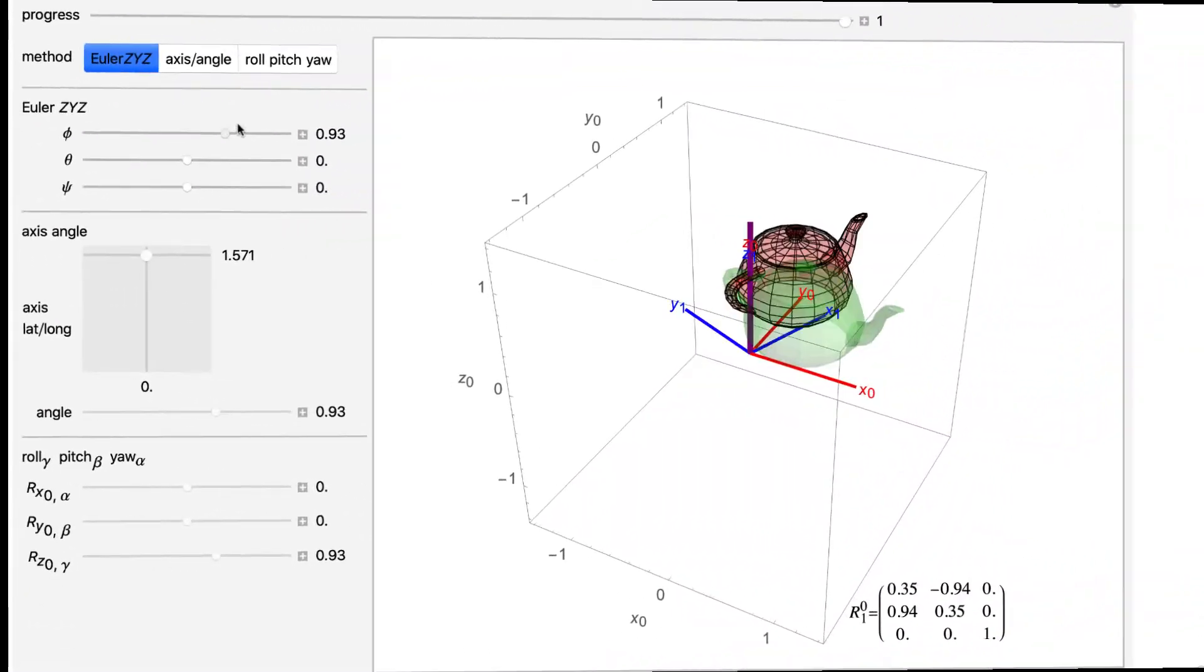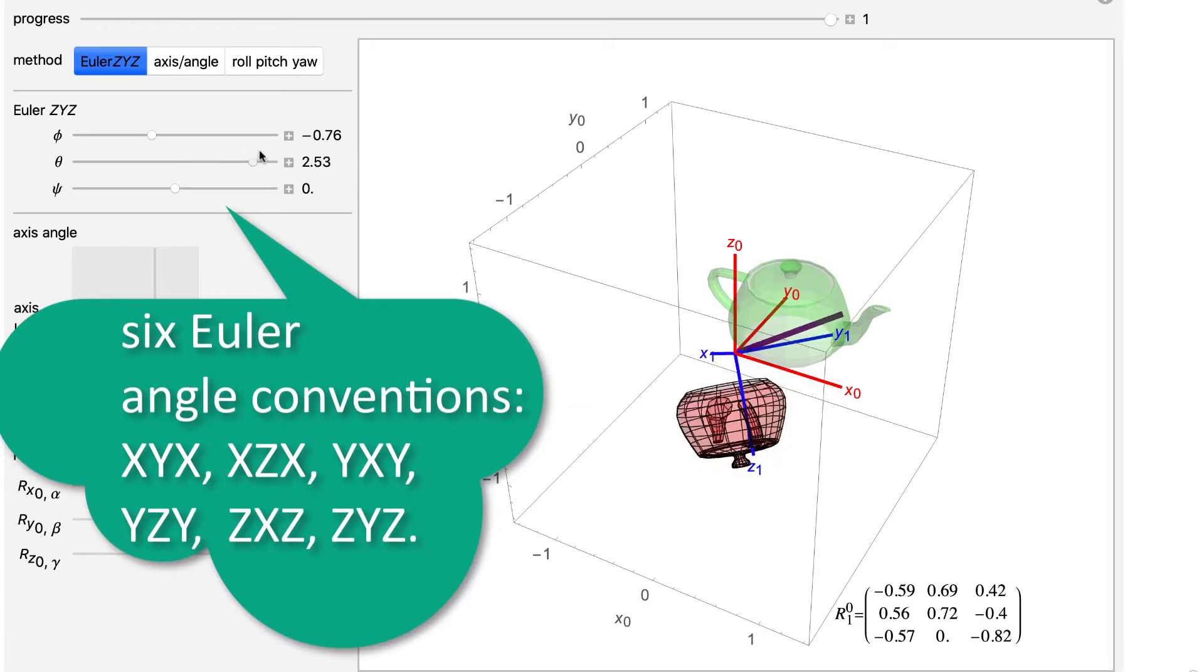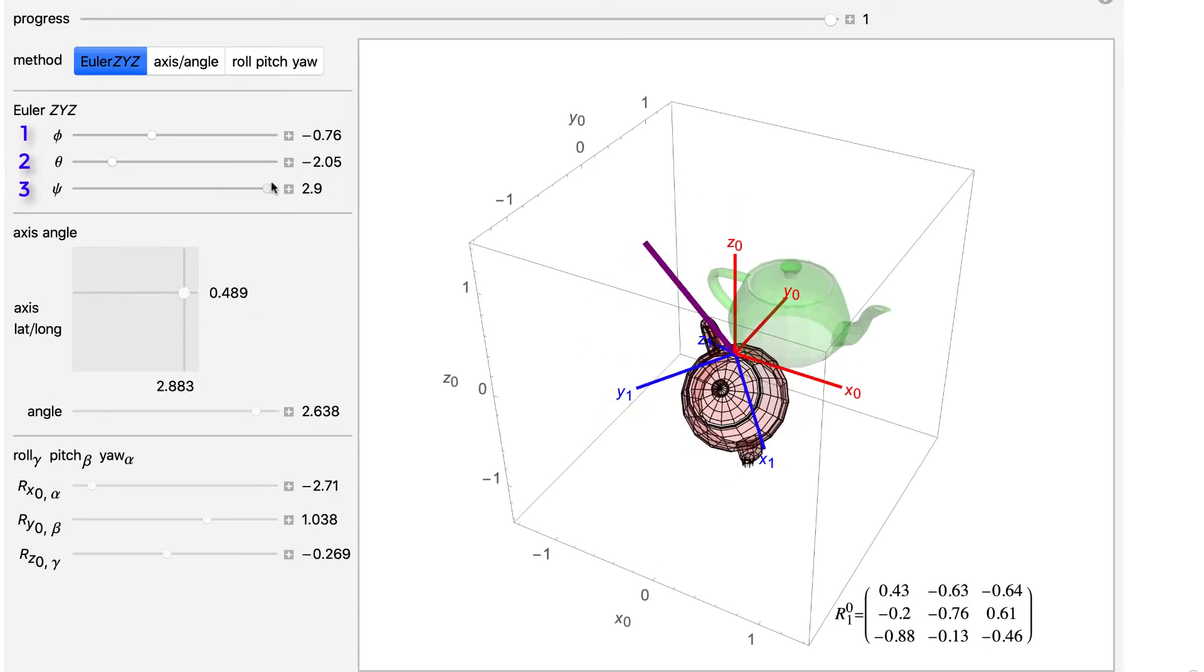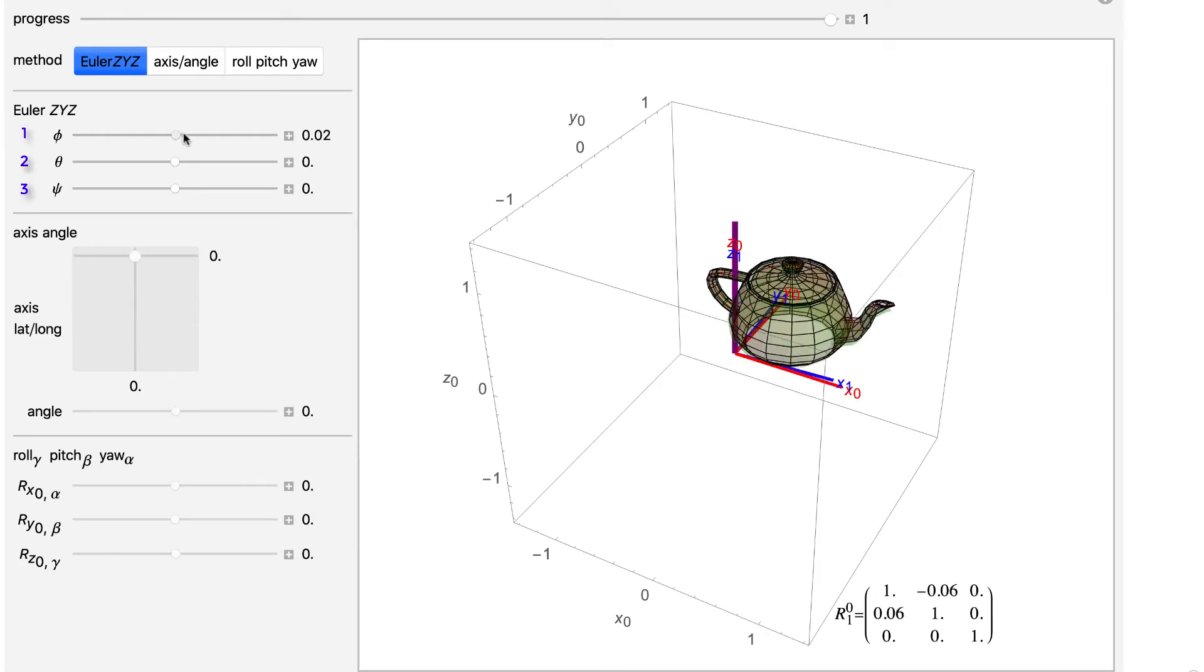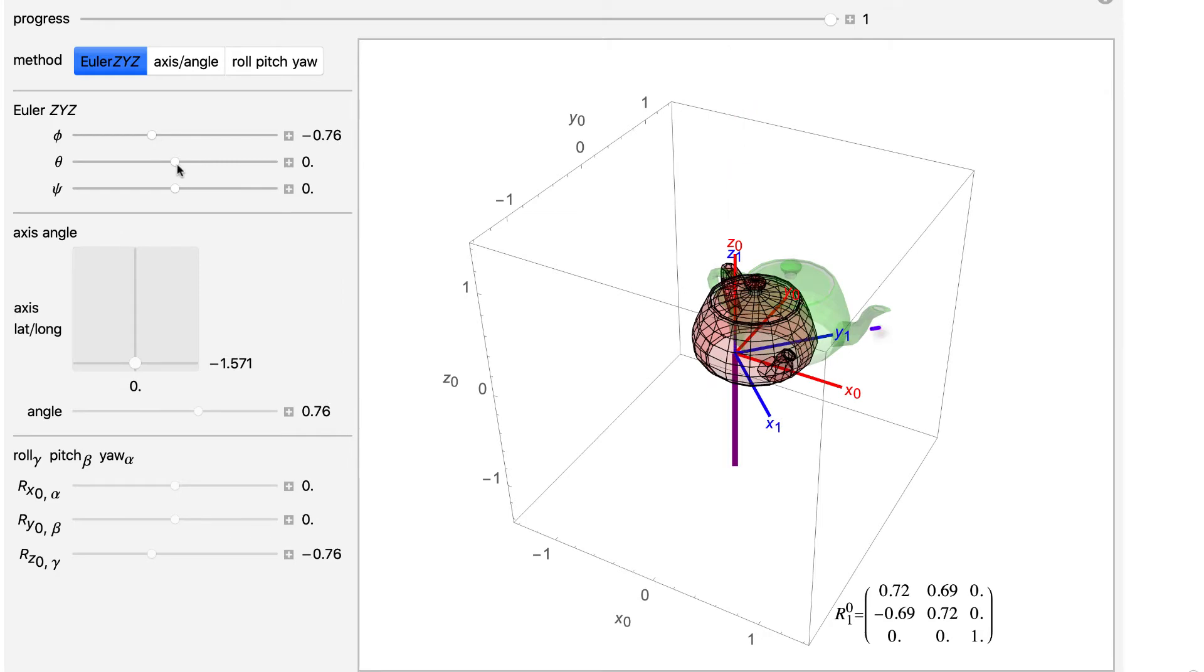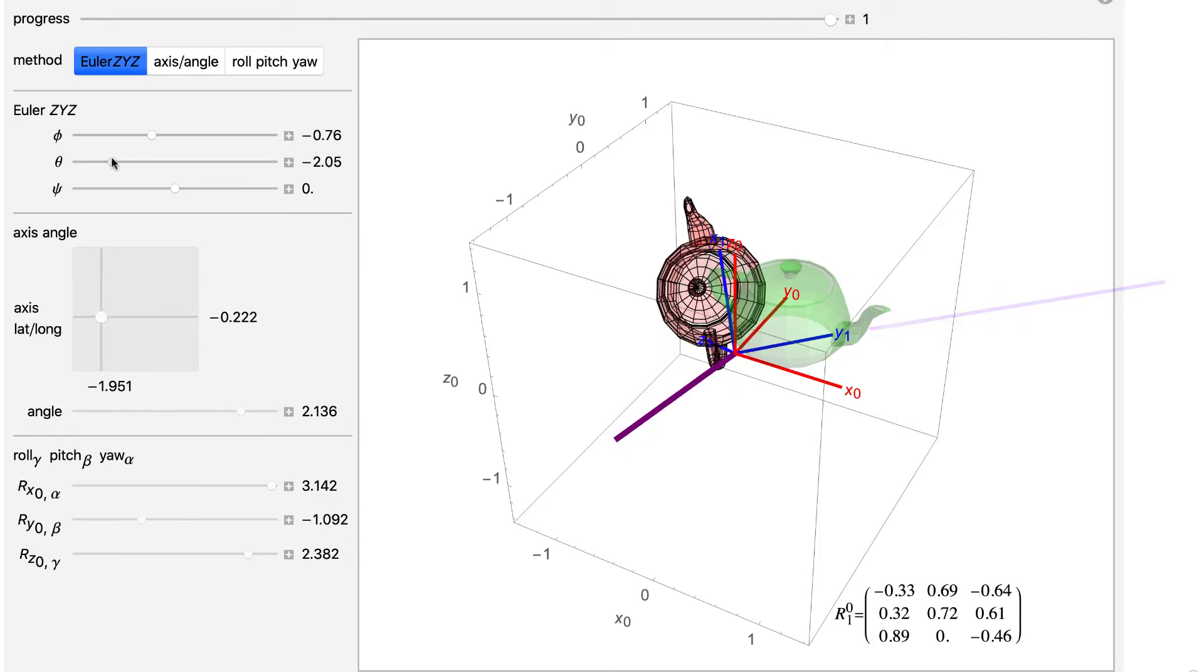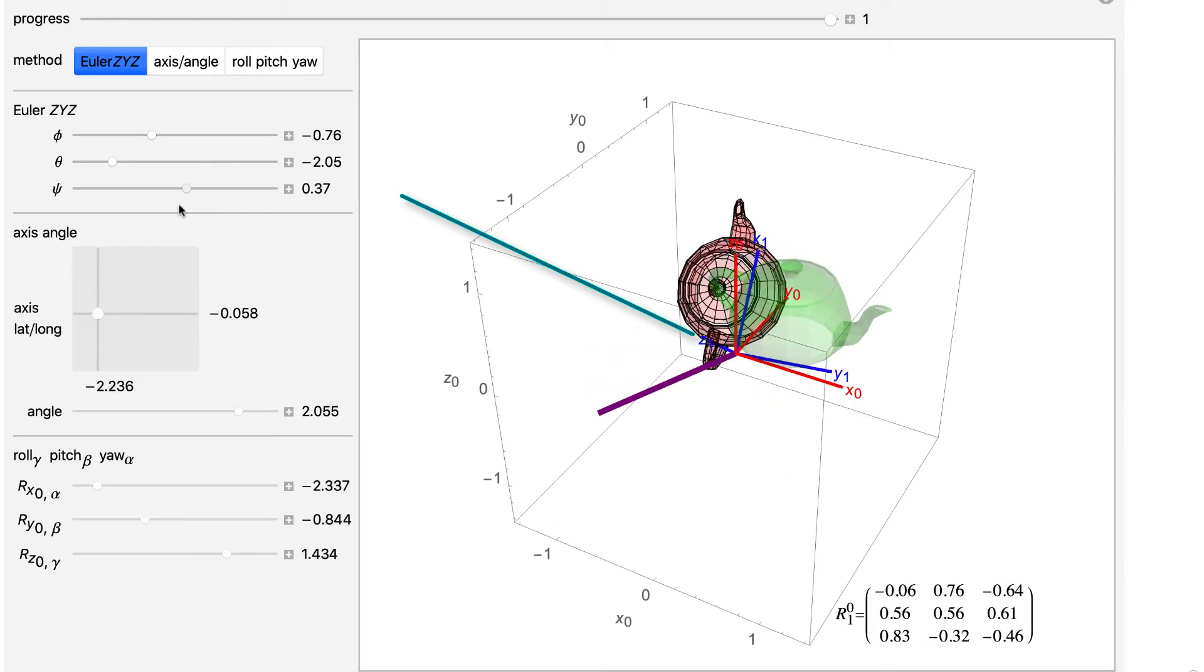The first parameterization uses Euler angles. There are many Euler angle conventions. This demonstration uses the ZYZ convention, which specifies the orientation of a frame by three successive rotations. The first rotates about the Z-axis by the angle phi. Next, we rotate about the current Y-axis by the angle theta. Finally, we rotate about the current Z-axis by the angle psi.